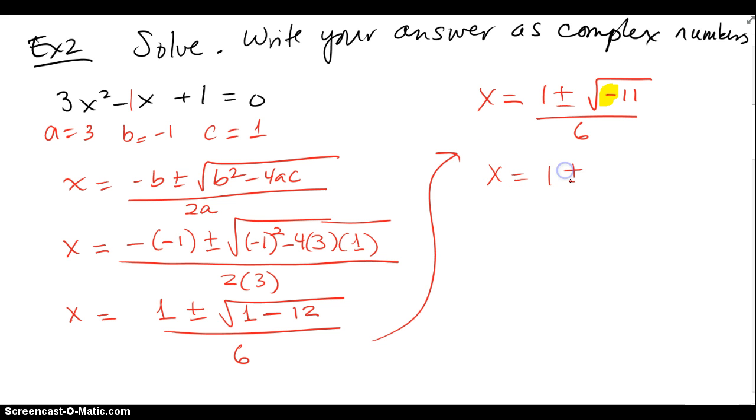And notice this negative I have to take out as an i because it's square root of negative 1, so I have x equals 1 plus or minus, i comes outside, square root of 11 all over 6. So these are my two complex solutions that I found to this quadratic equation.